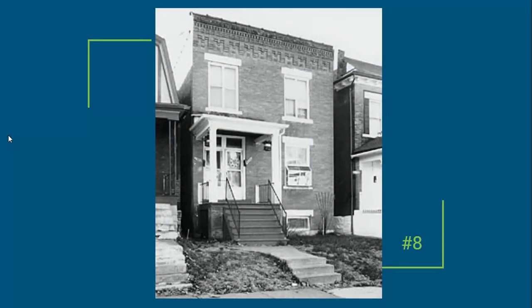Does it begin with J.B. Shelley in 1948, who bought a duplex in St. Louis to move his family in, only to find that there were neighborhood covenants — neighborhood rules — which prohibited African Americans from living in that neighborhood? J.B. Shelley sued against these covenants, stating that it was a violation of his civil rights to determine who could and could not live in a neighborhood. The Supreme Court ruled in his favor. Does it begin in 1948 with J.B. Shelley?